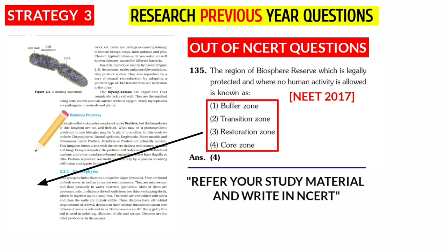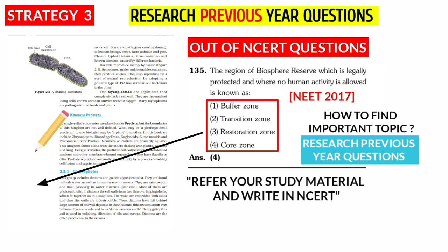I have given this as an example. If you research previous year questions, you will find many questions. For those questions, refer to the study materials alongside NCERT. That is how to find important topics — research previous year questions. If you follow these three strategies, you can score 340 plus in NEET Biology.